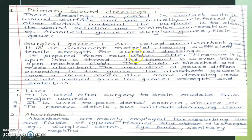Surgical gauze, also called absorbent gauze, is an absorbent material with sufficient tensile strength for surgical dressings. It is prepared from raw cotton — after cleaning, it is spun into threads. The threads are woven into an open-meshed cloth, which is then bleached and made absorbent. The mesh size of gauze differs according to its use; some dressings need a close mesh size for greater strength and protection. It is used after surgery to drain exudate from major wounds.